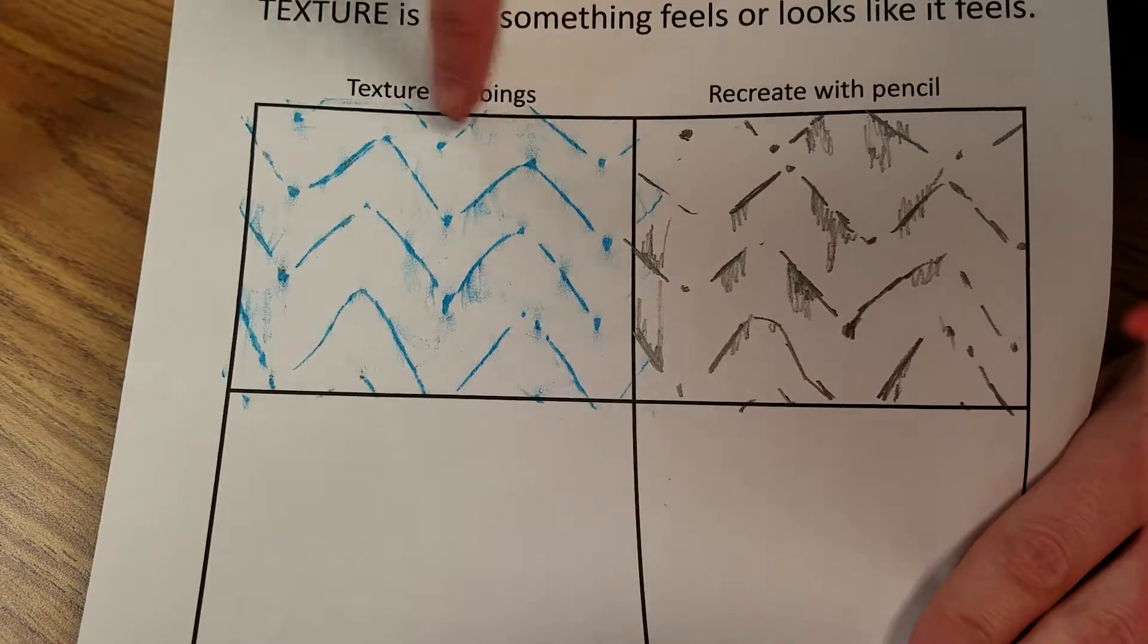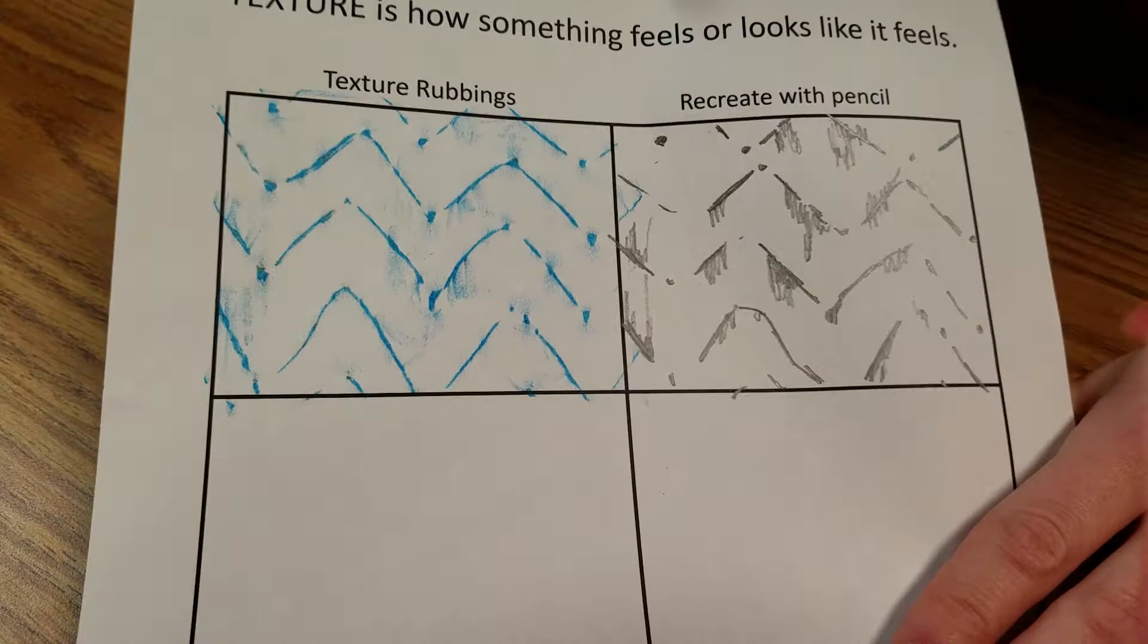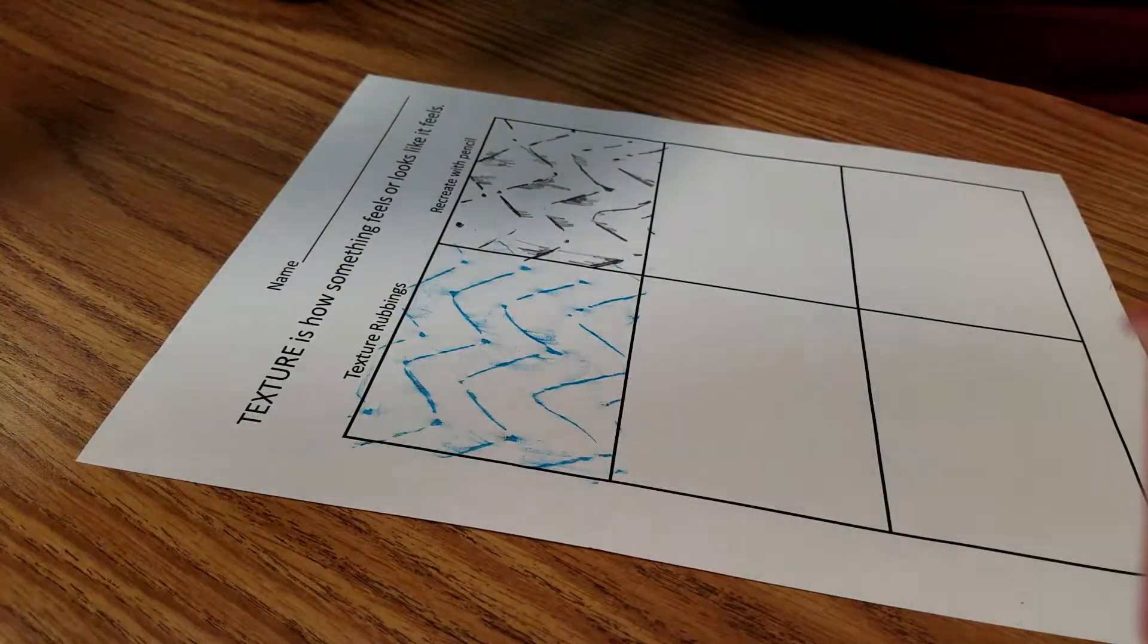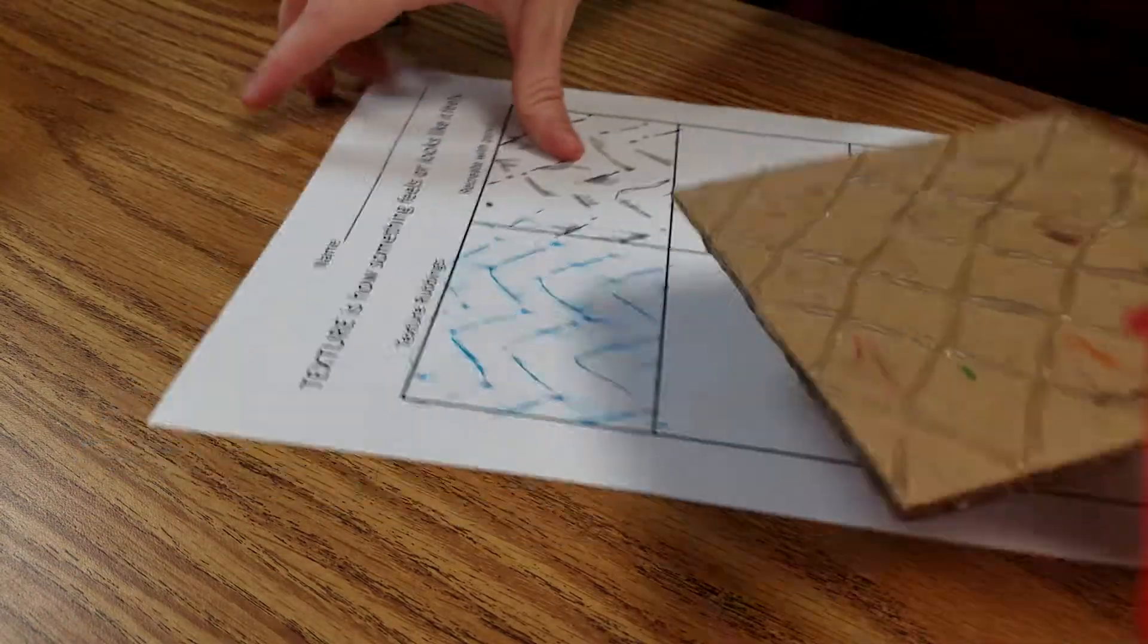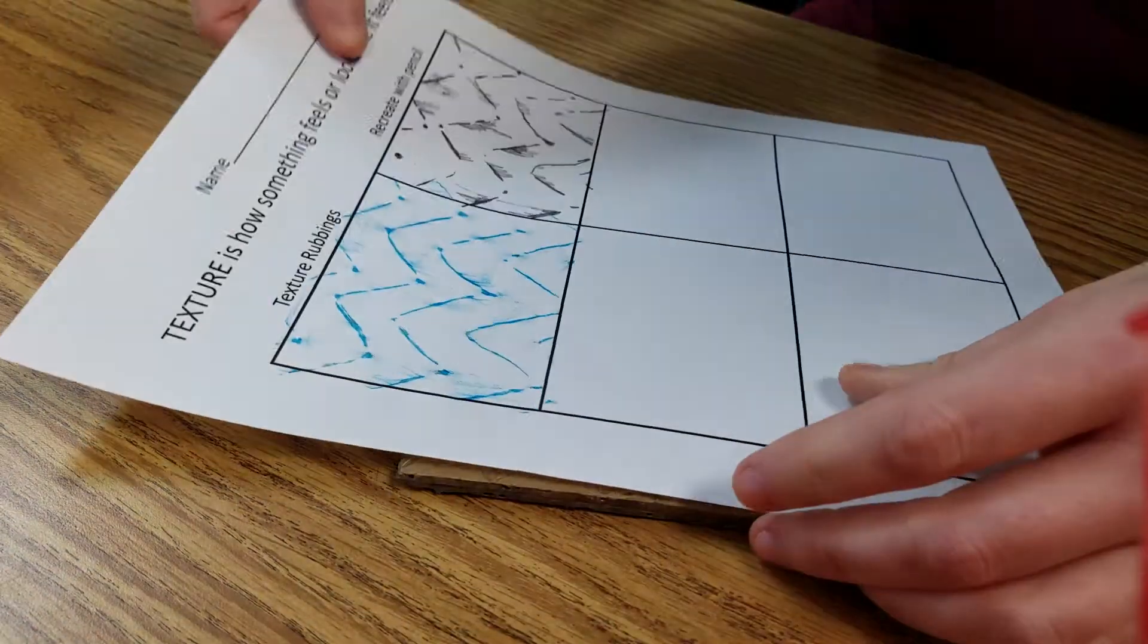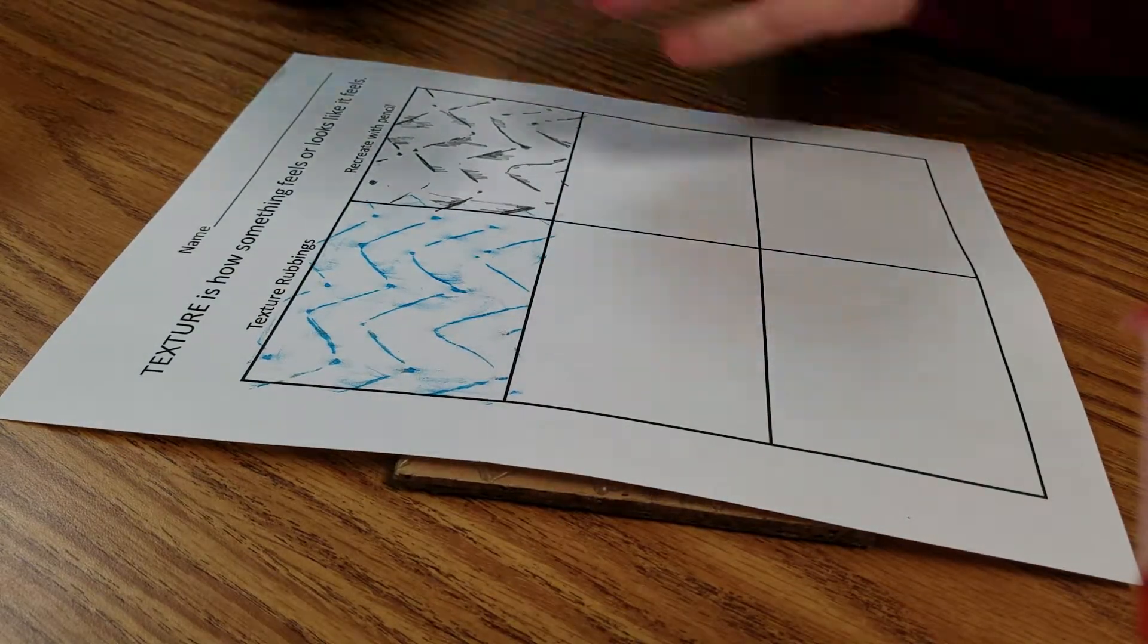But this one is just you and a pencil. Okay, so you could take your texture, they want to do this one, take the next texture, put it underneath here, get your crayon out, do your rubbing.